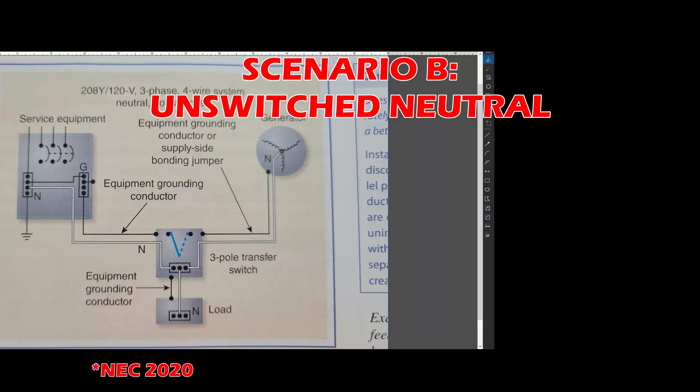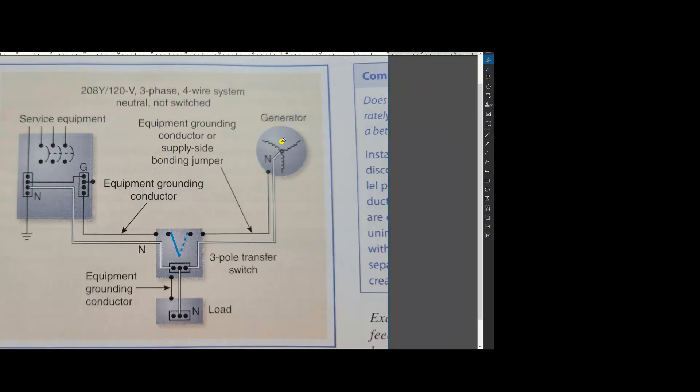In this scenario, the neutral wire is continuous. Follow the neutral wire with me. It originates at the generator and is continuous all the way back to the electrical panel. That means your transfer switch or interlock system never disconnects the neutral wire as shown here.